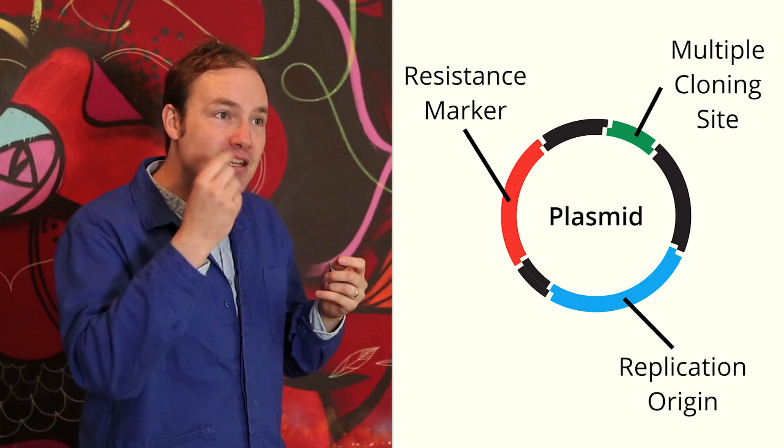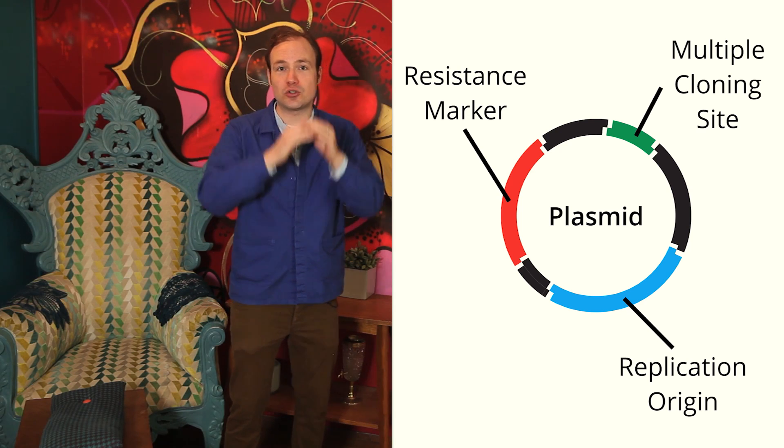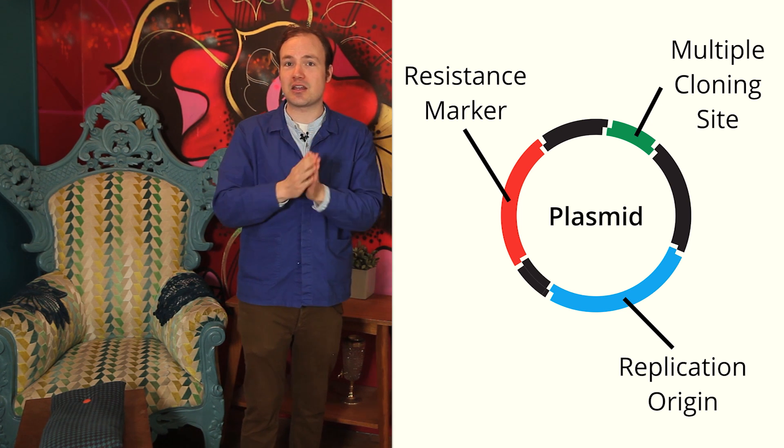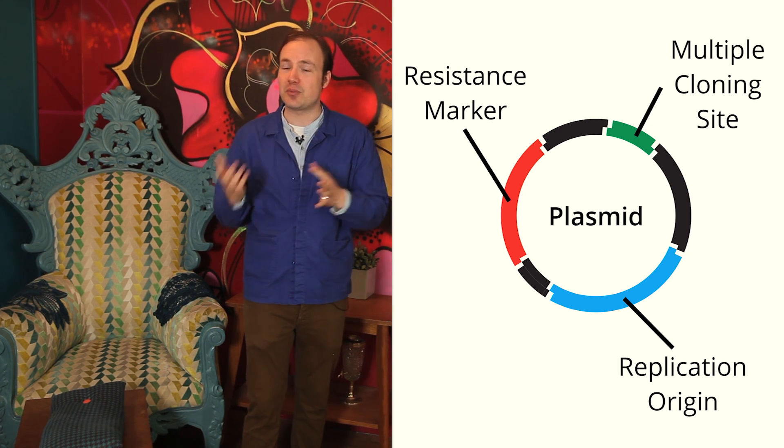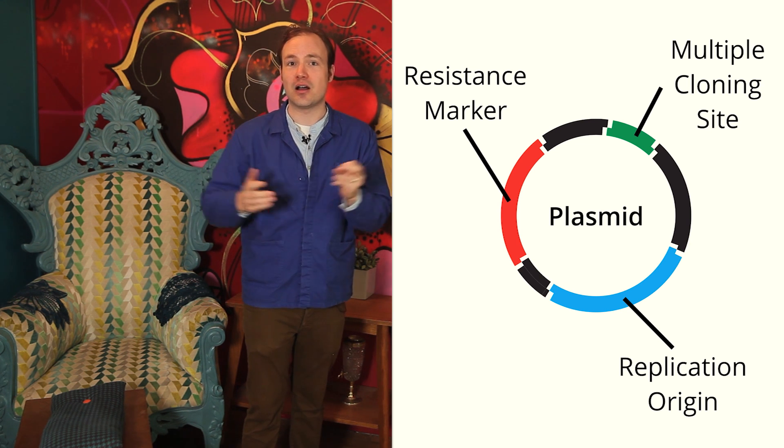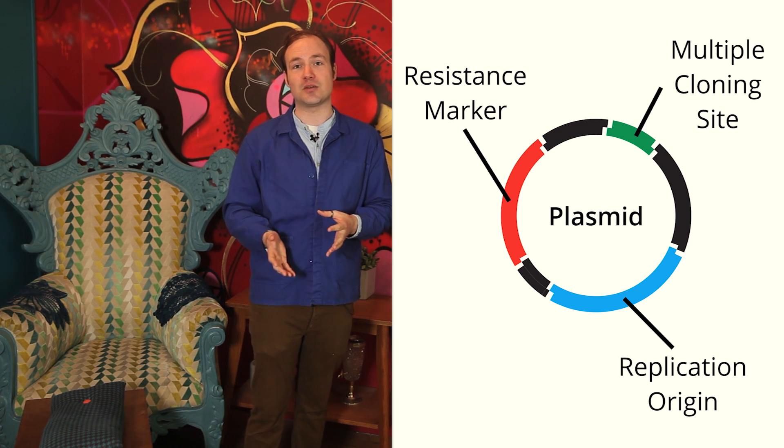Multiple cloning sites contain many short recognition sequences for restriction enzymes, which we can use to cut open a plasmid and paste in a new DNA sequence. You can think of the MCS as a safe place for new DNA, where we can add the genes for fluorescence, for example, without disrupting the overall function of the plasmid.